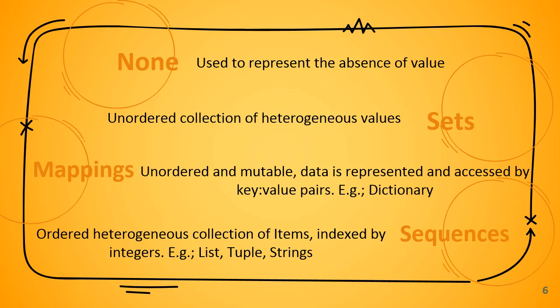Sets are an unordered collection of heterogeneous values that can store any type of data without duplicates and are immutable — once created they cannot be changed. Mappings are not ordered and data is accessed by key-value pairs rather than index values. Sequences are ordered collections indexed by integers, meaning each element can be accessed based on its position. Examples of sequences include lists, tuples, and strings.